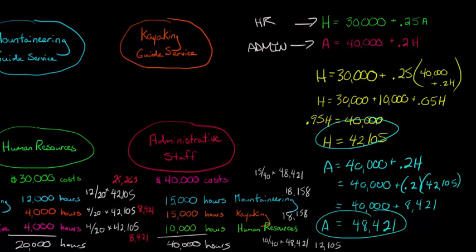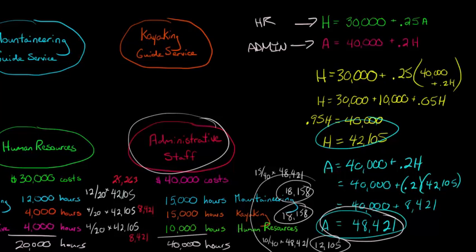Now, if you add up this 12,105, 18,158, and 18,158, it's going to give you $48,421. So that's just a check to make sure you did it right. And what that means is that we've allocated from the administrative staff $48,421 in costs that was divided in this manner among HR, mountaineering, and kayaking.